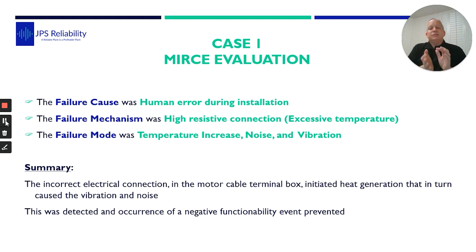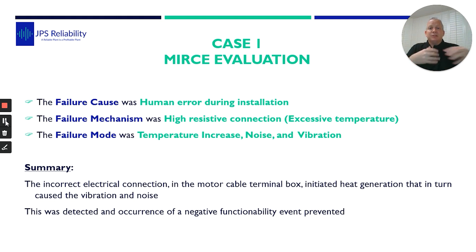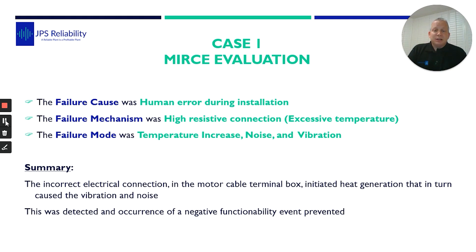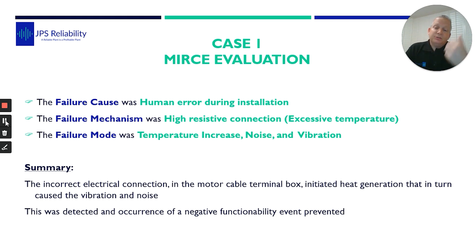Now, this was detected — an occurrence of a negative functionality event was prevented. That means it didn't stop mid-production and cause a big backlog. It wasn't a negative event. So with this knowledge of condition monitoring, we've highlighted why the issue occurred, so we can look at ensuring that people follow procedures. And also on the side of this mode, it'll be a double-check on connections. But it managed this company to put a quick plan in place to mitigate stopping production, to manage that shutdown, to change the motor out — because they knew they had to change the terminal box and just change the motor.